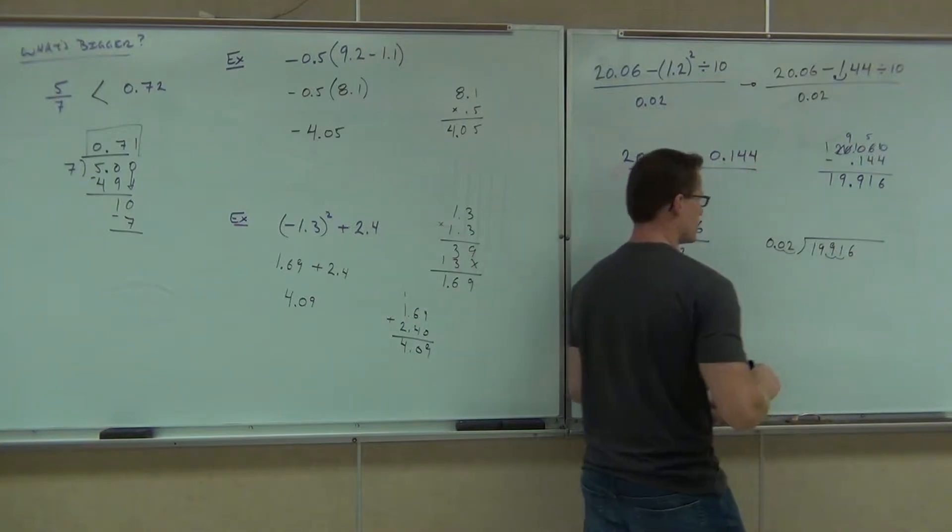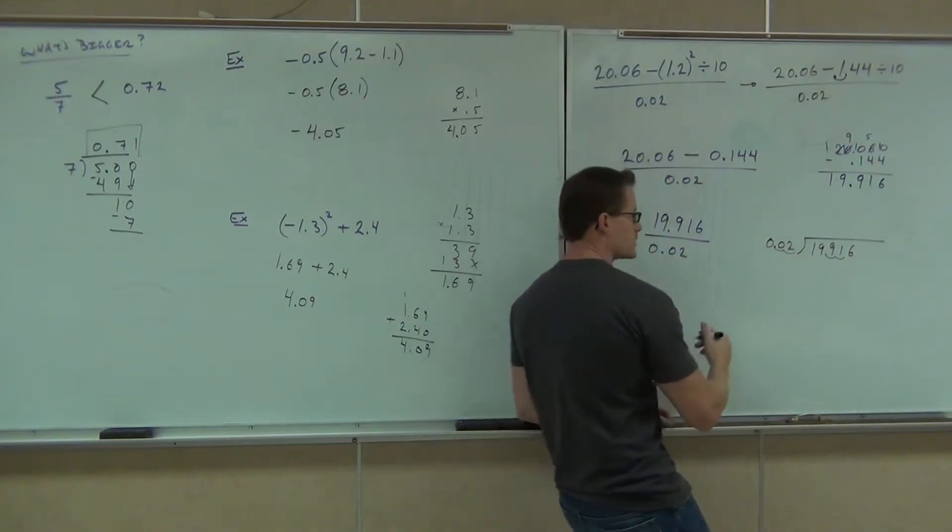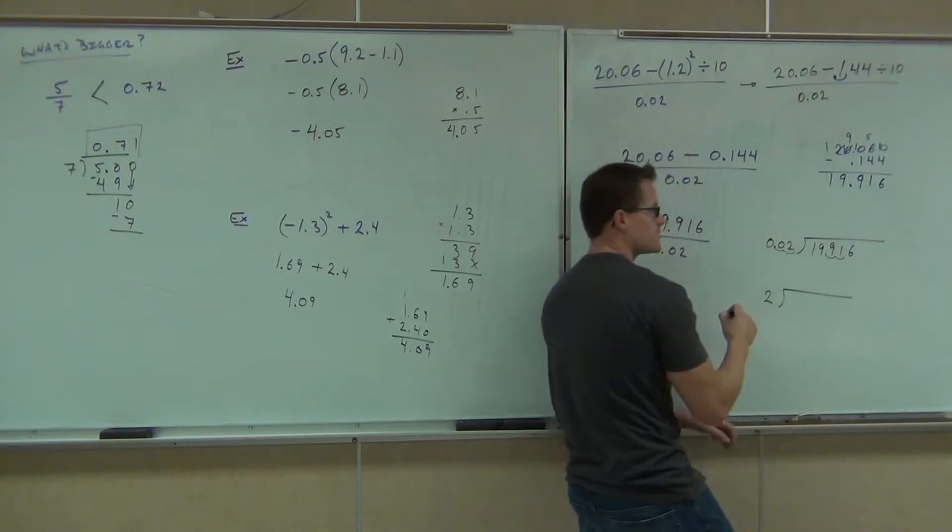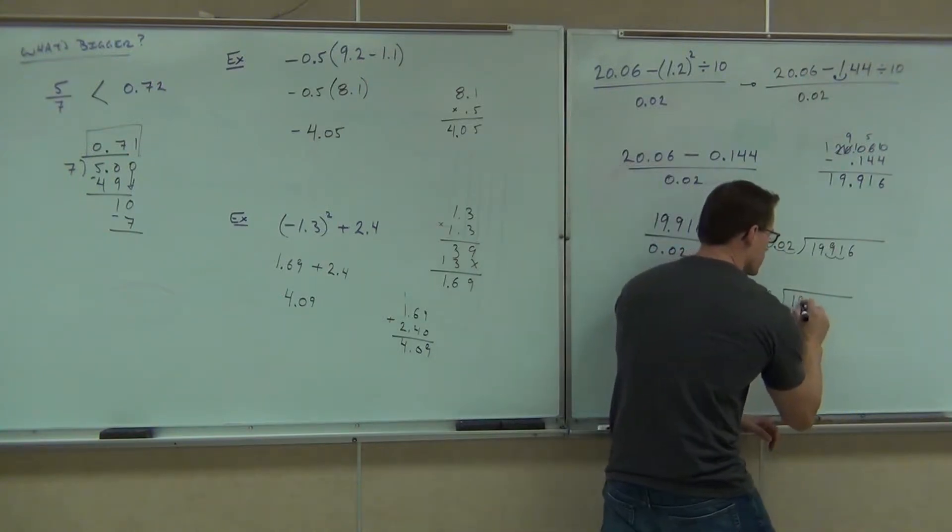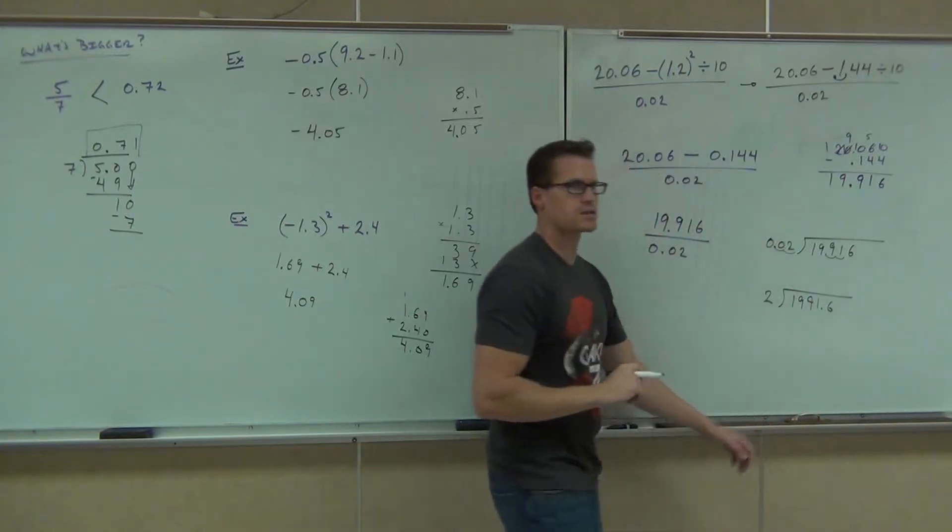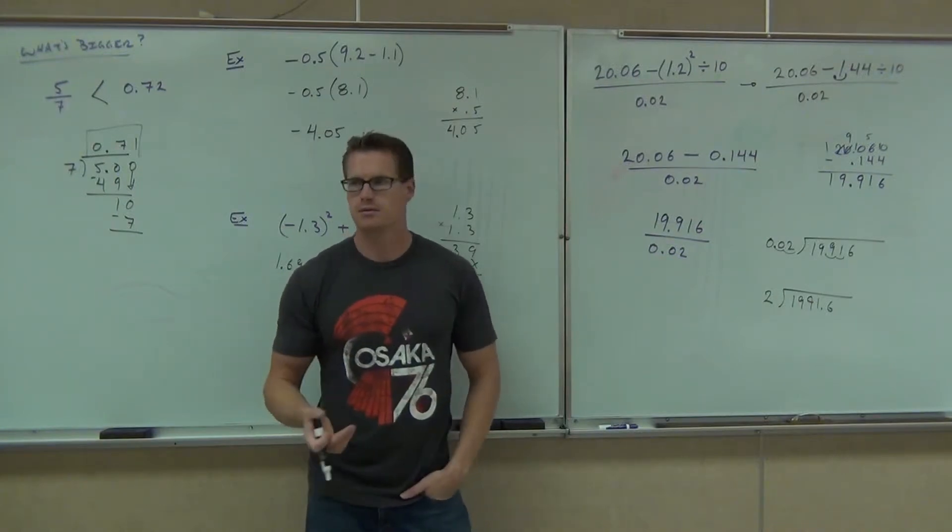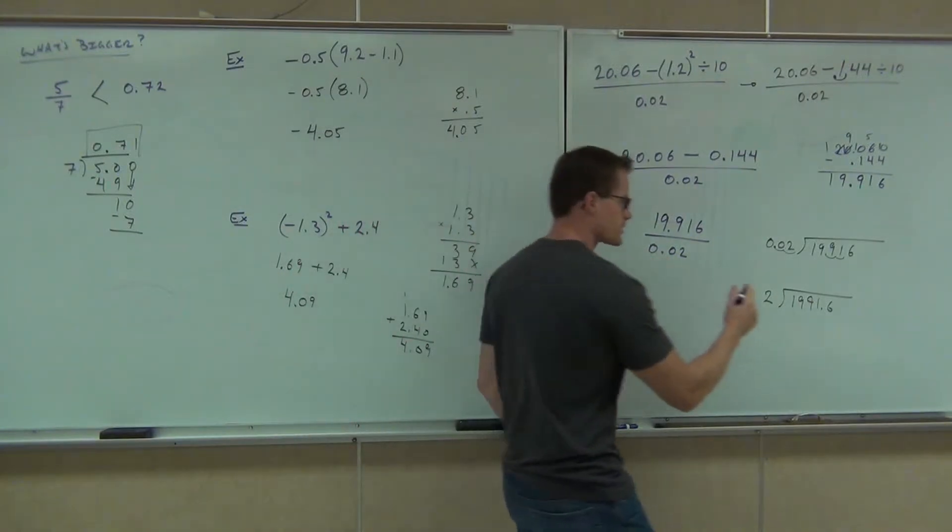Move this two spots to the right. So instead of 0.02 we have 2, instead of 19.916 we have 1991.6. Then divide, making sure our decimal place goes up here as well.